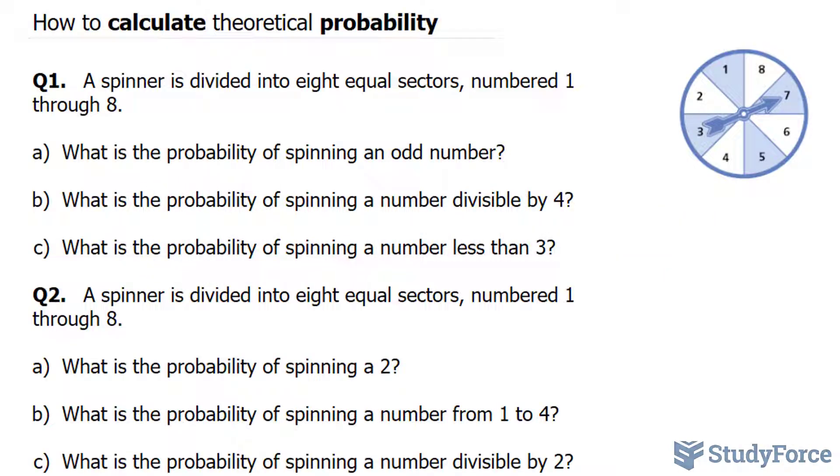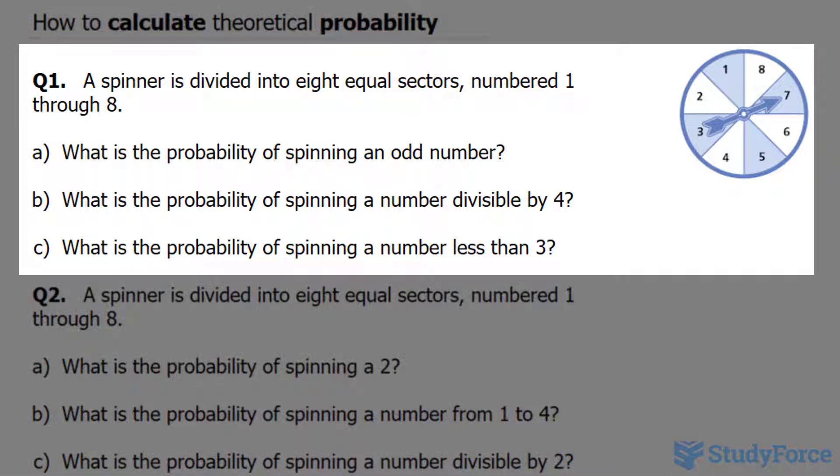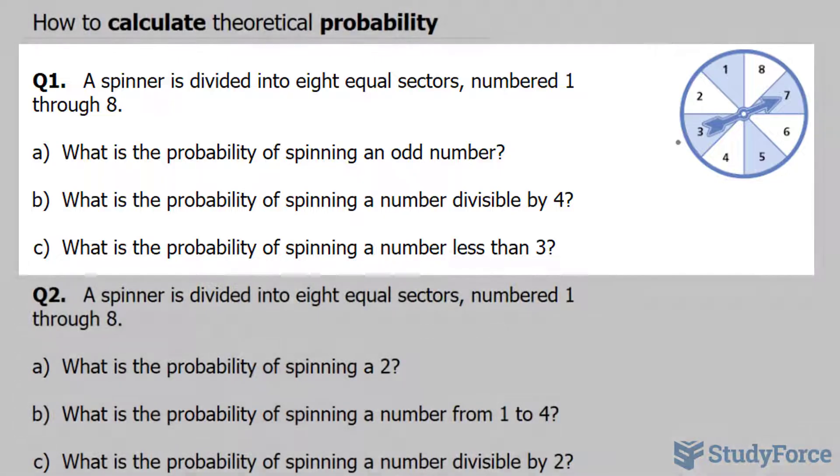In this video, I'll show you how to calculate theoretical probability. The first question asks, a spinner is divided into eight equal sectors numbered one through eight, as shown. What is the probability of spinning an odd number?